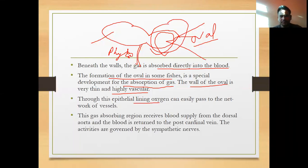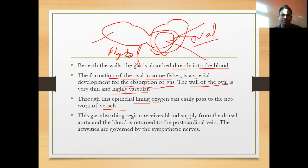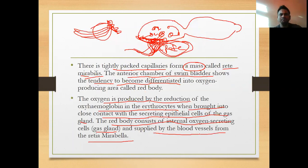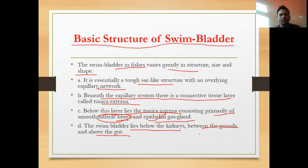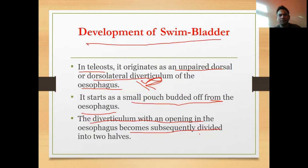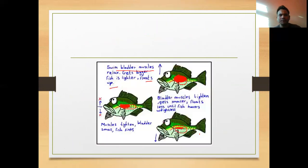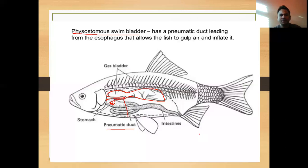Through the epithelial lining, oxygen can easily pass to the network of vessels. This gas-absorbing region receives blood supply from the dorsal aorta and the blood is returned to the postcardinal vein. The activities are governed by the sympathetic nerves. This is about the swim bladder which is present in bony fish species.